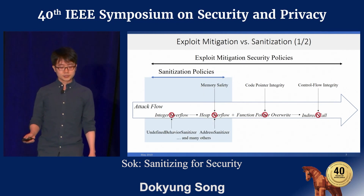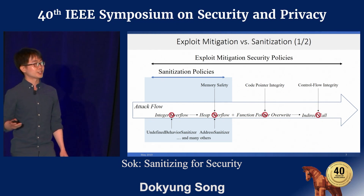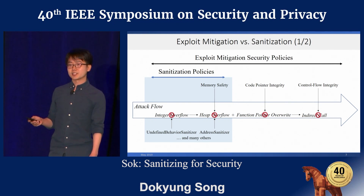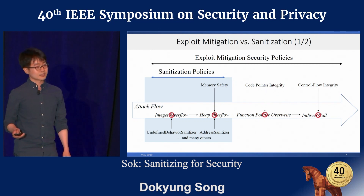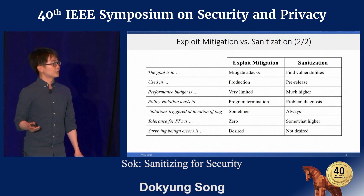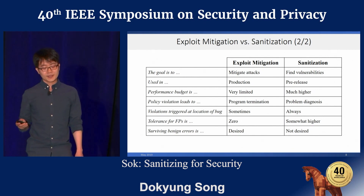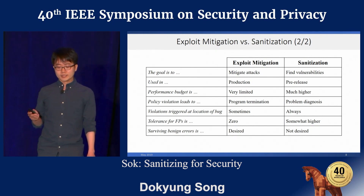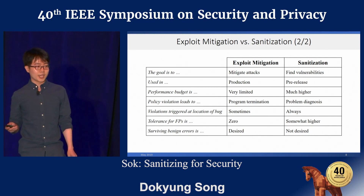On the other hand, tools that perform forms of bound checking, such as SoftBound and AddressSanitizer, can be viewed as sanitizers because they do detect the heap buffer overflow — the vulnerability itself — as it occurs. Their differences can be further summarized as follows: sanitizers do have a more relaxed performance budget than exploit mitigations. It's often more desirable to track more diagnostic information as the program executes, because such information can tell you about the location of the vulnerability.